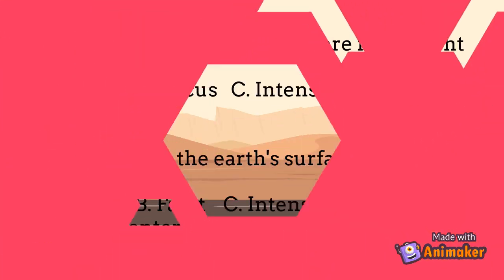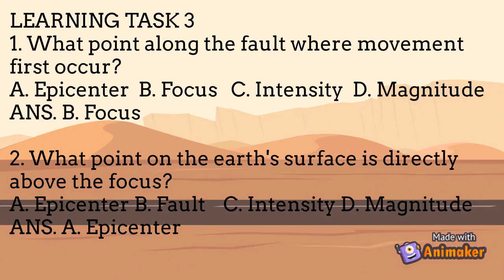Learning Task 3: Read the question carefully and choose the letter of the correct answer. Number 1: What point along the fault is where movement first occurs? A. Epicenter, B. Focus, C. Intensity, D. Magnitude. Answer: B, Focus. Number 2: What point on the Earth's surface is directly above the focus? A. Epicenter, B. Fault, C. Intensity, D. Magnitude. Answer: A, Epicenter.